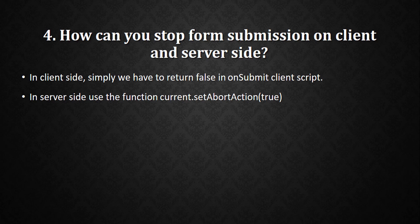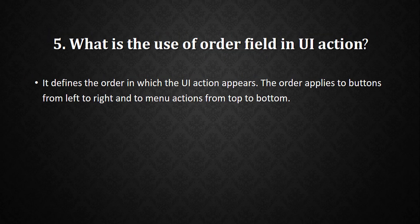The next question is: what is the use of the order field in a UI action? If you are creating any UI action or have seen an existing one, you may have noticed there is an order field. It defines the order in which the UI action appears — the order applies to buttons from left to right, and to menu actions from top to bottom. We put a numeric value there for this ordering.